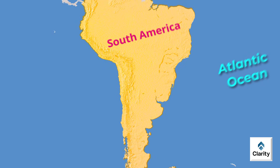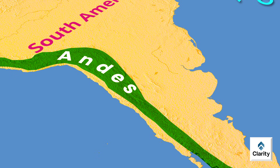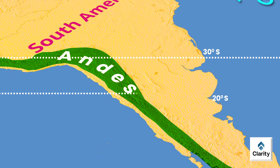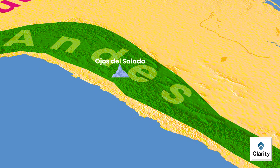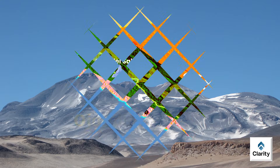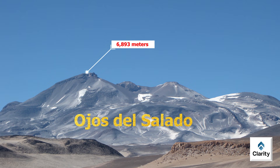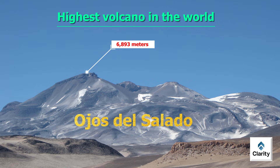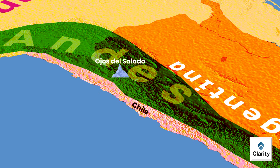Now we move to some important mountain peaks in the Andes between 30 degrees South and 20 degrees South latitude. First among these is Ojos del Salado, located on the border between Chile and Argentina. It rises to 6,893 meters above sea level and holds the title of the highest volcano in the world. However, it is currently inactive and not erupting.